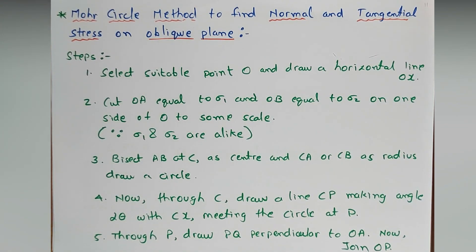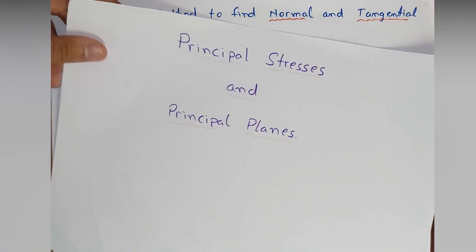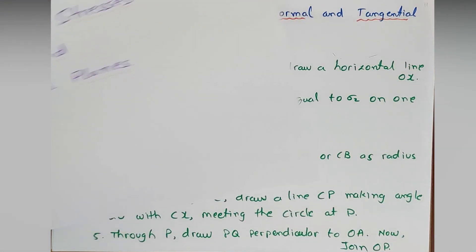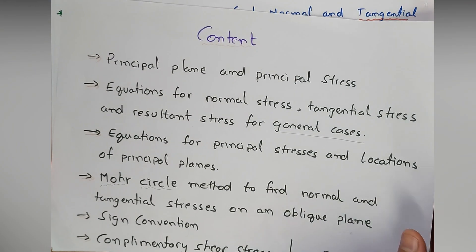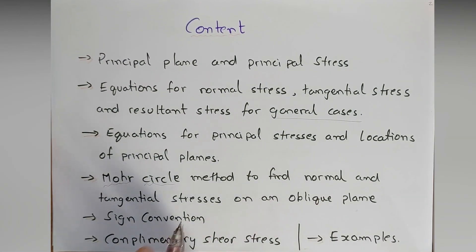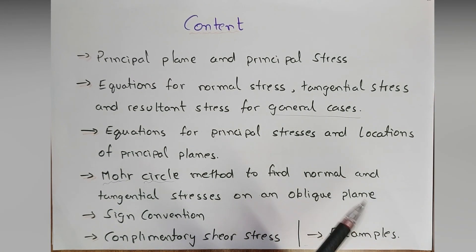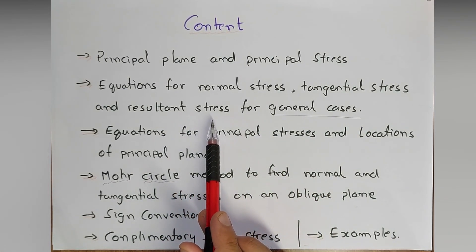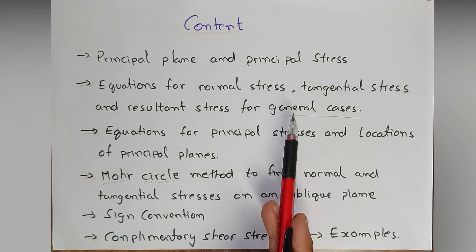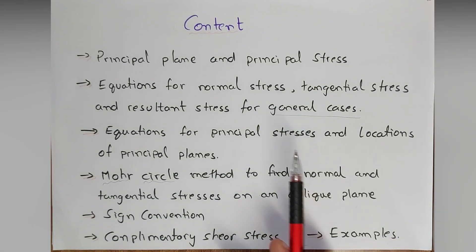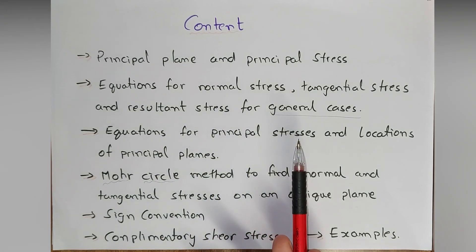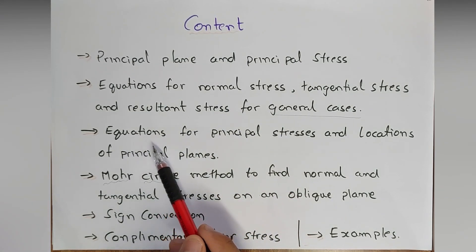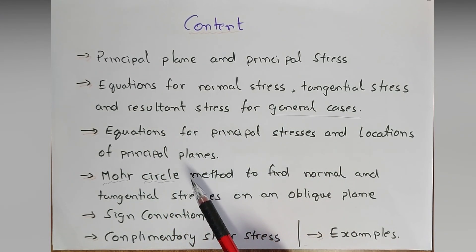Hello friends, welcome to the fourth part of the topic Principal Stresses and Principal Planes. Last time we understood principal planes and principal stresses, then equations for the general case. There are four cases for equations of normal stress, tangential stress, and resultant stresses. We solved these analytically, and we also saw equations for principal stresses and location of principal planes.